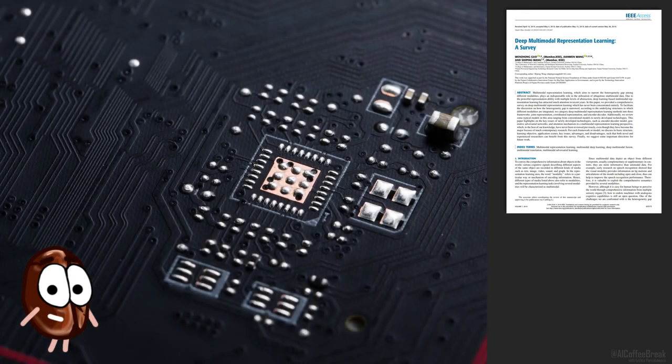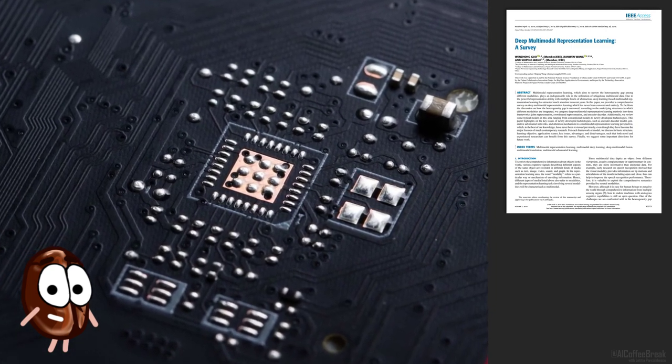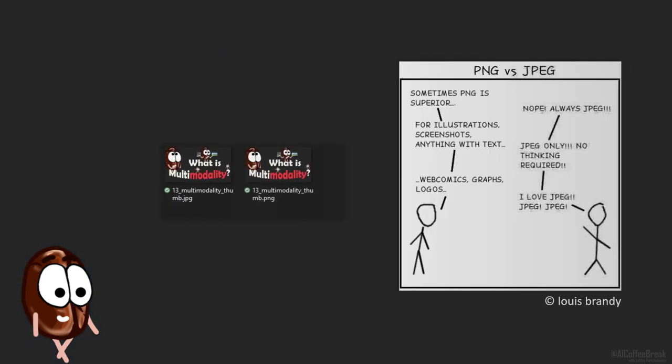The machine usually knows only about zeros and ones and the rest is programming. But after this definition, JPEG and PNG are different modalities too, because they are different ways to encode the same information of any image. So what is happening here?